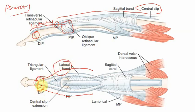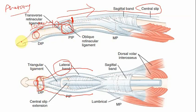Now assume the central slip is torn. When the person tries to extend and the extensor mechanism acts, the torn central slip cannot bring about any extension at the proximal interphalangeal joint. But the intact lateral band can still bring about extension at the distal interphalangeal joint, while the failed central slip results in flexion at the proximal interphalangeal joint. This is what is called boutonniere deformity.